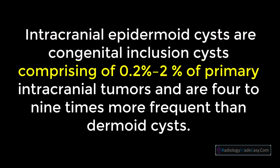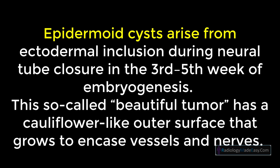Intracranial epidermoid cysts are congenital inclusion cysts comprising 0.2% to 2% of primary intracranial tumors, and are 4 to 9 times more frequent than dermoid cysts. Epidermoid cysts arise from ectodermal inclusion during neural tube closure in the third to fifth week of embryogenesis.